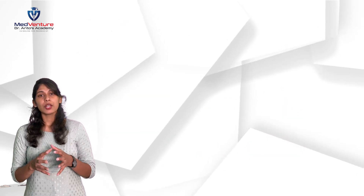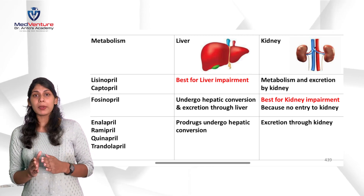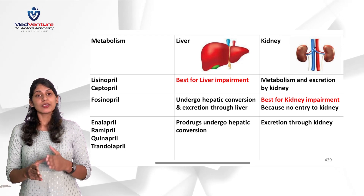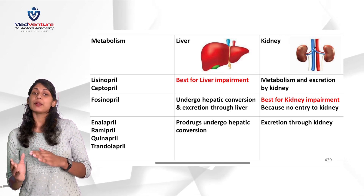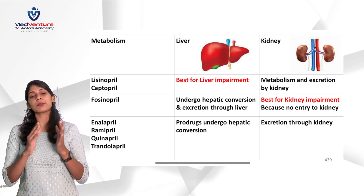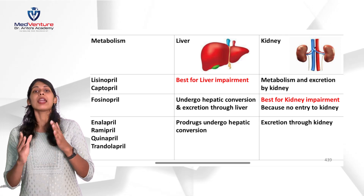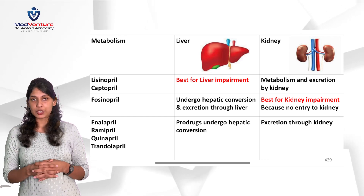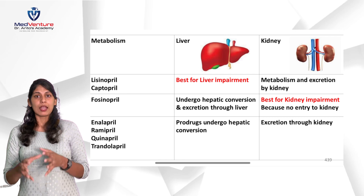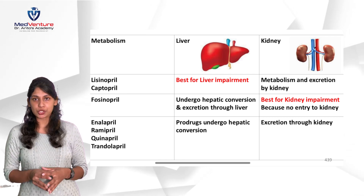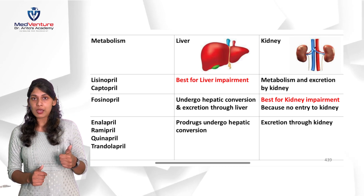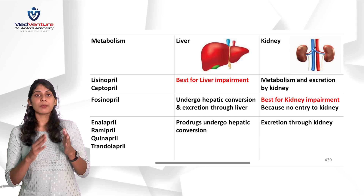ACE inhibitors are also contraindicated in pregnancy. Regarding their metabolism: most ACE inhibitors undergo metabolism in the liver and kidney. However, lisinopril and captopril do not undergo hepatic metabolism — they are directly excreted by the kidney. This is why lisinopril and captopril are the preferred ACE inhibitors for liver patients, as they bypass liver metabolism entirely.